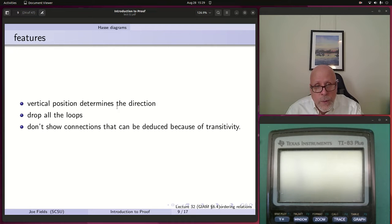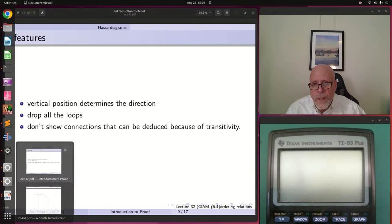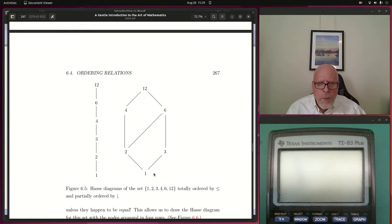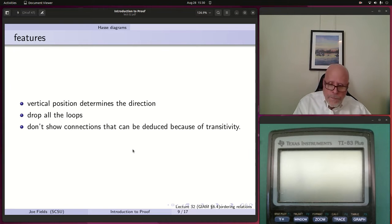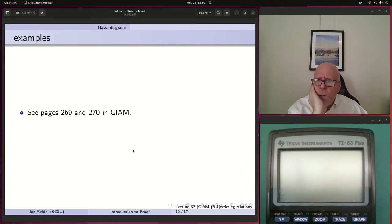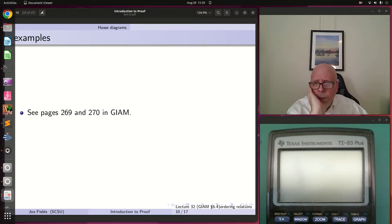There normally would be loops in the digraph version of an ordering relation, because we decided it was going to be reflexive. But if they're going to be everywhere, why do you need to draw them all? Vertical position will give us the direction of the arrows so we don't have to draw arrowheads. And loops are there, but you don't need to draw them in. Also, don't show connections that can be deduced because of transitivity.